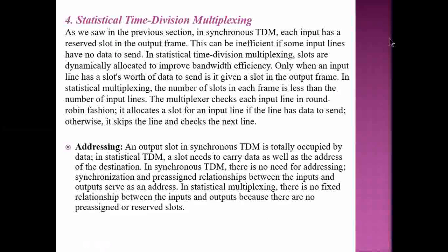In statistical multiplexing, the number of slots in each frame is less than the number of input lines. The multiplexer checks each input line in round-robin fashion — it allocates a slot if the line has data to send, otherwise it skips to the next line. In synchronous TDM, a slot is totally defined by its position. But in statistical TDM, a slot needs to carry both data and the address of the destination — that is the key difference. Addresses are given to the data so they can be uniquely identified at the demultiplexer.